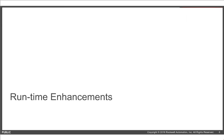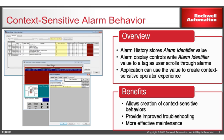For the runtime improvements, one of the really crucial ones is the ability to provide your operator with a more context-sensitive alarm experience. In the Studio environment, every alarm can be associated with a unique identifier by the HMI designer. At runtime, as the operator scrolls through the history list of alarms, this unique identifier can be written to a tag. So once the system knows what alarm an operator is looking at, we can take many different context-sensitive behaviors. There's a really informative video in the handouts for this feature that I think is going to help improve functionality for operators.